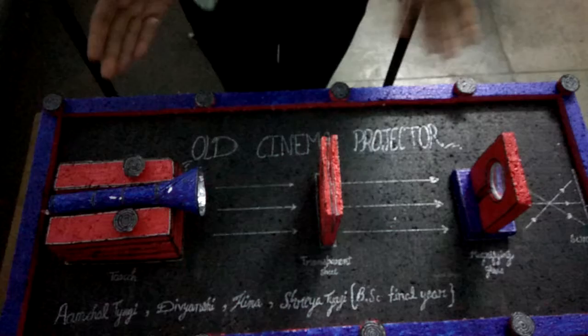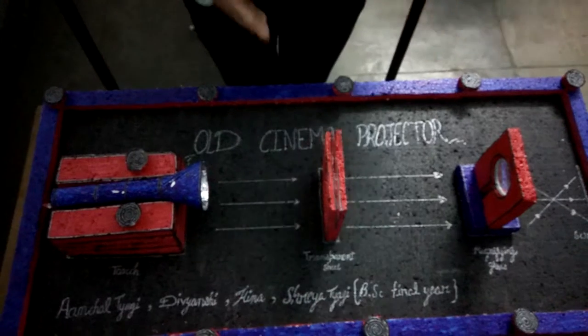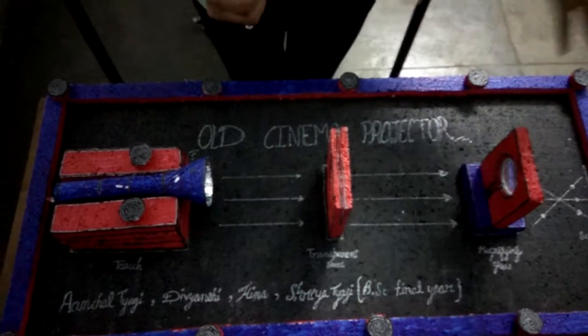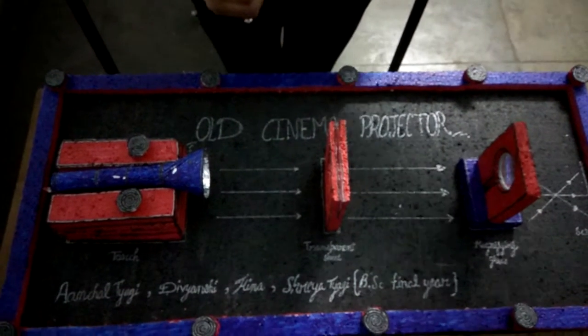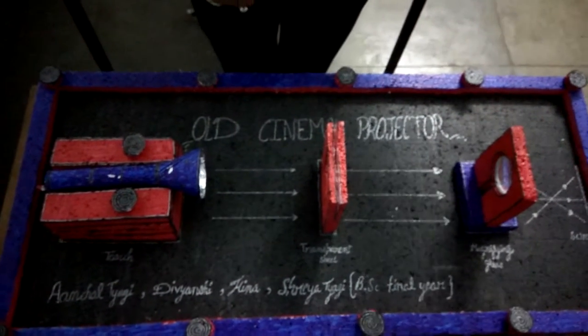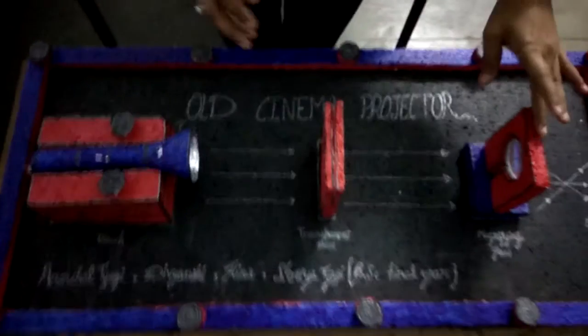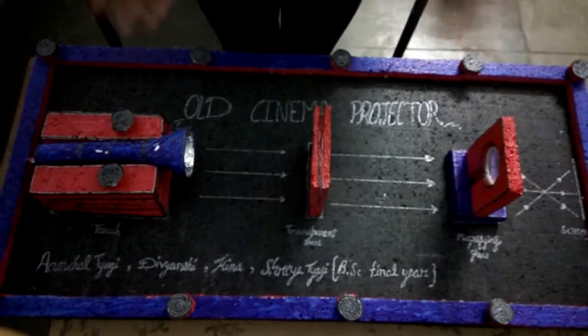This is an old cinema projector and it is used to display images or videos — huge, magnified images or videos — on the screen. It was first invented by Charles Francis Jenkins. We use a magnifying glass in it.